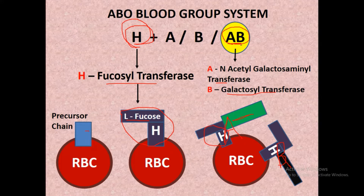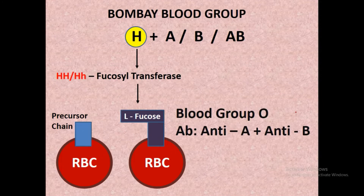So the person with AB blood group has both antigen A and antigen B present on the surface of their RBC. As stated earlier, the H gene is required for the synthesis of either antigen A or antigen B.